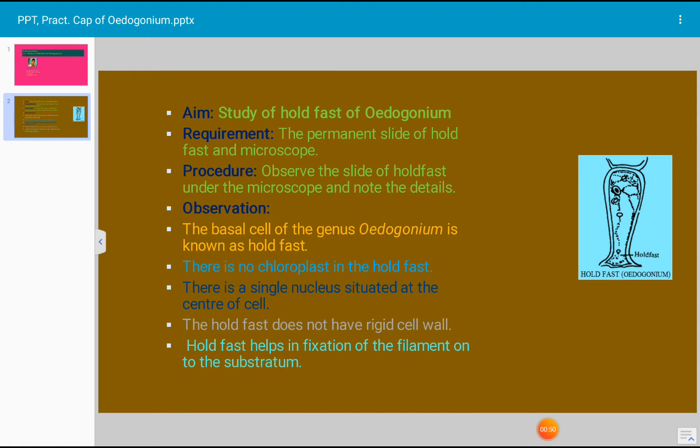In procedure, what we have to do is observe the permanent slide of hold fast under the microscope and note all the details of hold fast of Oedogonium. Oedogonium is an algal plant.